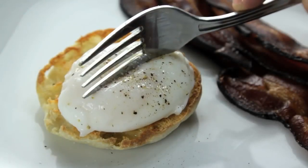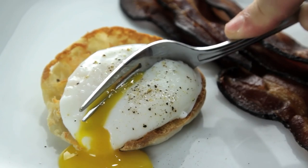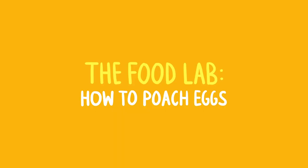The perfect poached egg: tender whites around a warm liquid yolk that oozes out like gold when you cut into it. They're an essential part of Eggs Benedict, they can turn any salad into a meal or any vegetable into brunch.